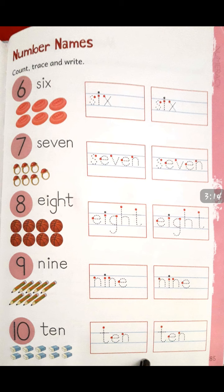6 — 6 is written and there are 6 objects. Write the 6 on the tracing. Next, 7 — count the rings and trace the spelling of 7.